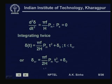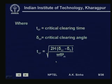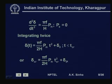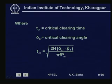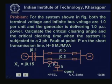From this relationship, we can calculate T_Cr: T_Cr equals the square root of [2H(delta_Cr minus delta_0) / (pi·f · P_m)]. This is obtained by rearranging the swing equation integrated result to isolate T_Cr squared, then taking the square root. Let us now take an example to see how this works.